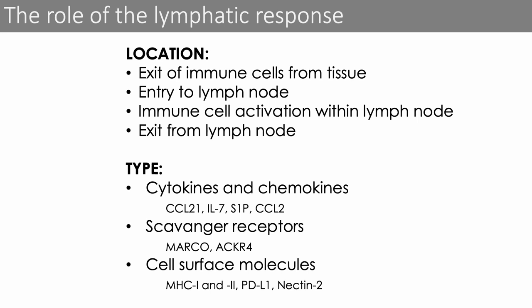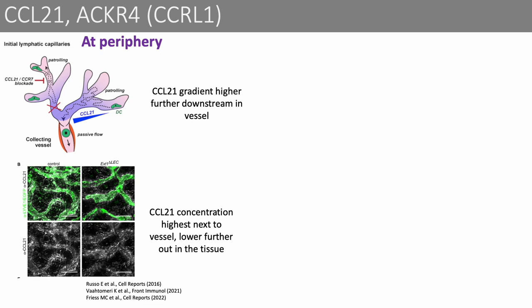I will start with the chemokine CCL21 and its scavenger receptor ACKR4, also called CCRL1. CCL21 is a chemokine produced by lymphatic endothelial cells — from now on I will call them LECs. In the periphery, CCL21 is deposited in a gradient from LECs, with concentration becoming lower the further away from the lymphatic endothelium. Dendritic cells will recognize CCL21 through their receptor CCR7 and actively migrate towards the higher gradient, further down in the capillary. This gradient helps propel migrating dendritic cells in the right direction towards the lymph node.